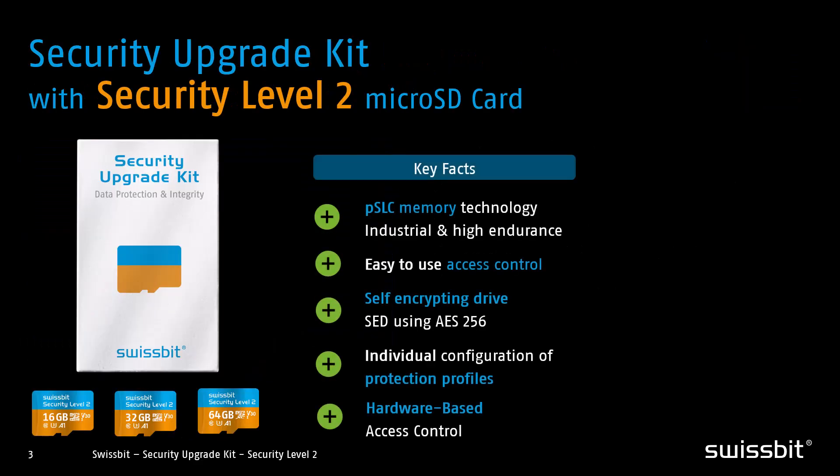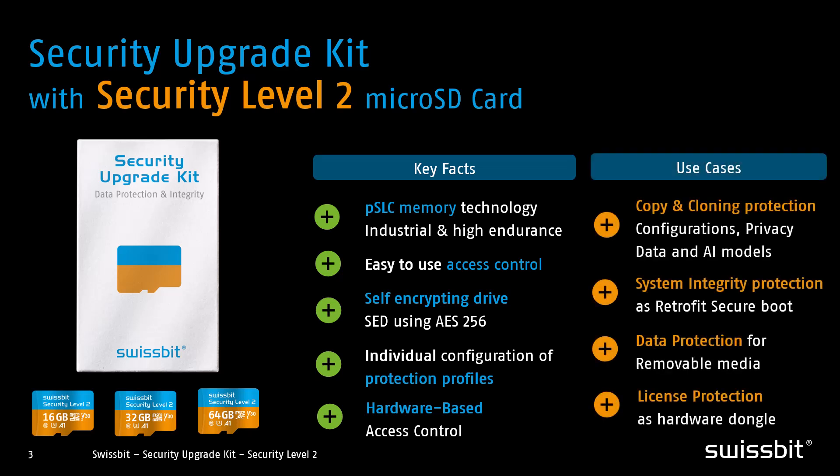Let's start with an overview of our Security Level 2 micro SD cards. These cards feature robust industrial memory and built-in access control, functioning as a self-encrypting drive. You can configure individual partitions with different protection profiles, securing everything from configuration files to data, preventing unauthorized copying or cloning. Most importantly for this video, we'll focus on how you can ensure system integrity, making the system tamper-proof so attackers cannot alter your data or applications. Our micro SD cards can also serve as secure removable media or be used for license protection with Wibu's CodeMeter Ready.